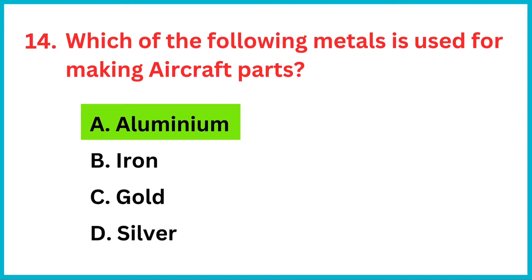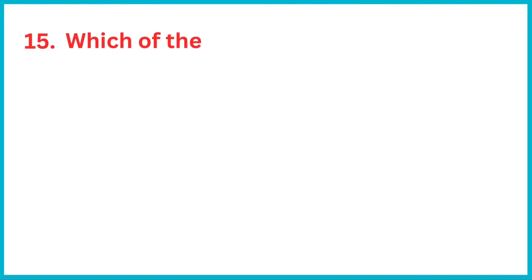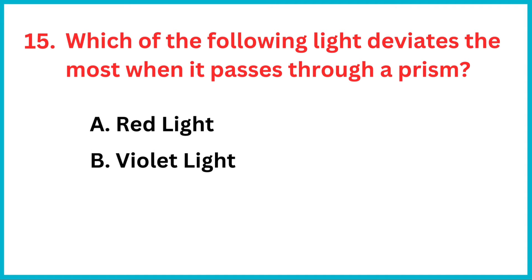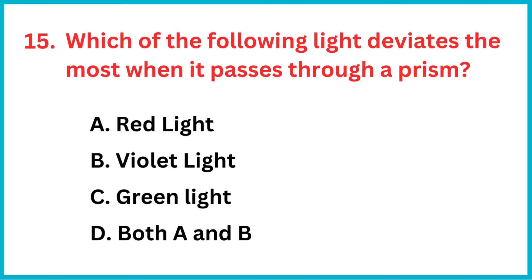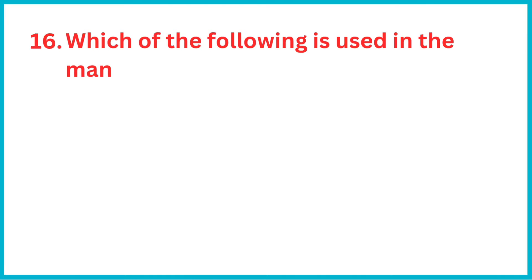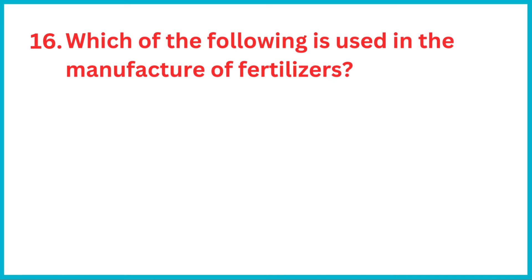The correct answer is option A: aluminum. Which of the following light deviates the most when it passes through a prism? The correct answer is option B: violet light.